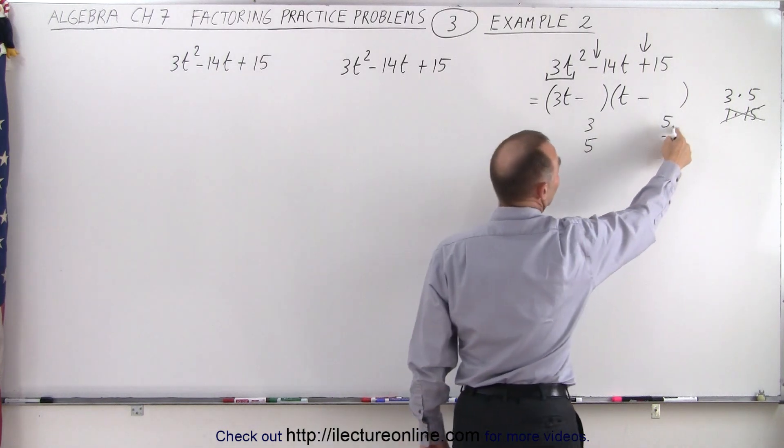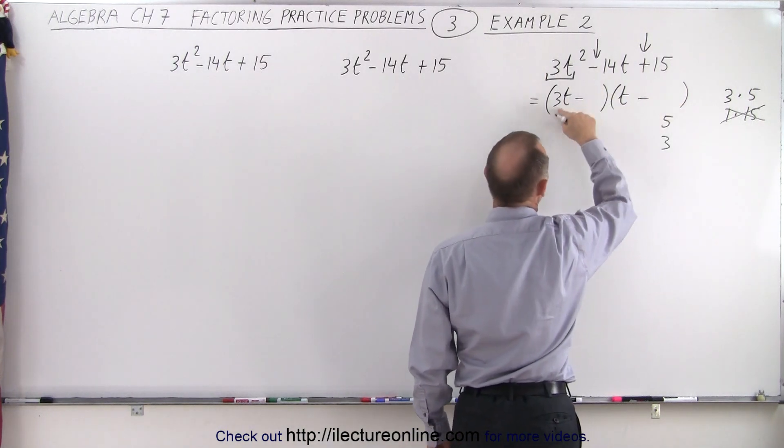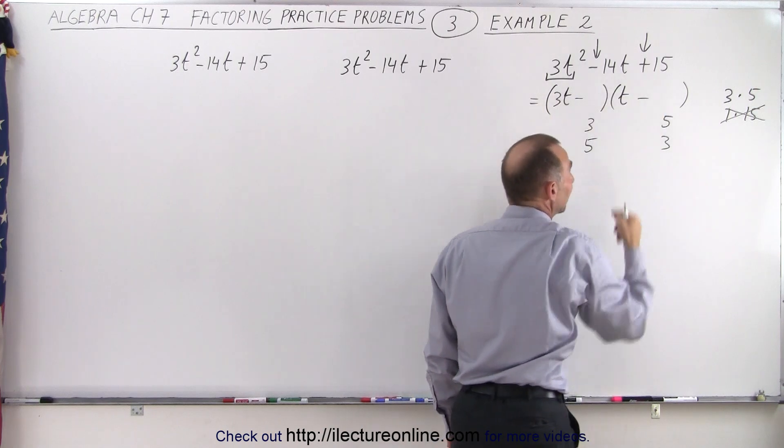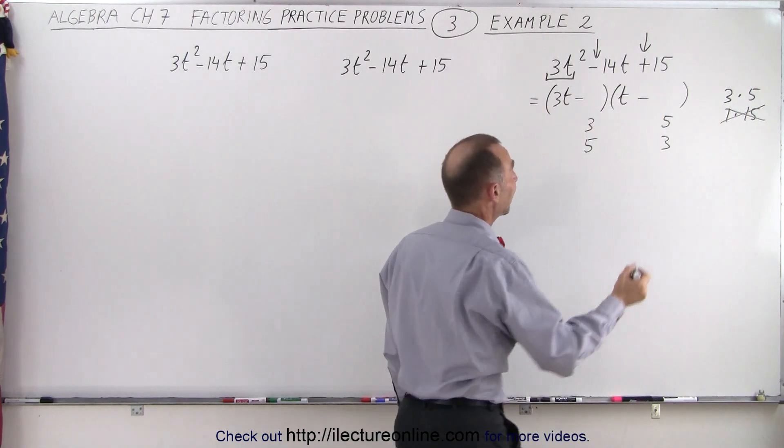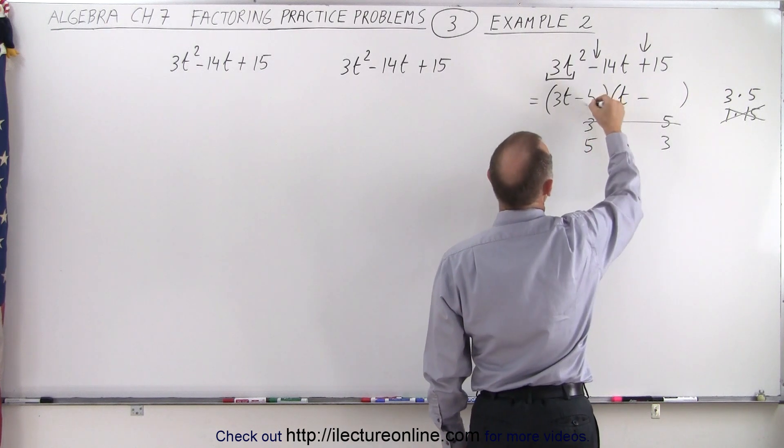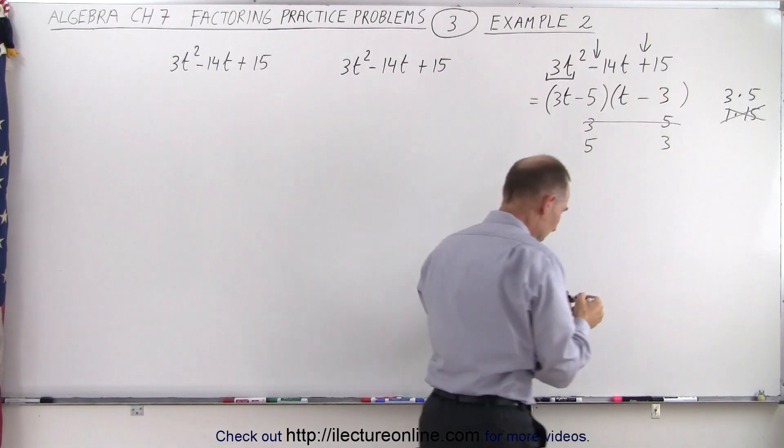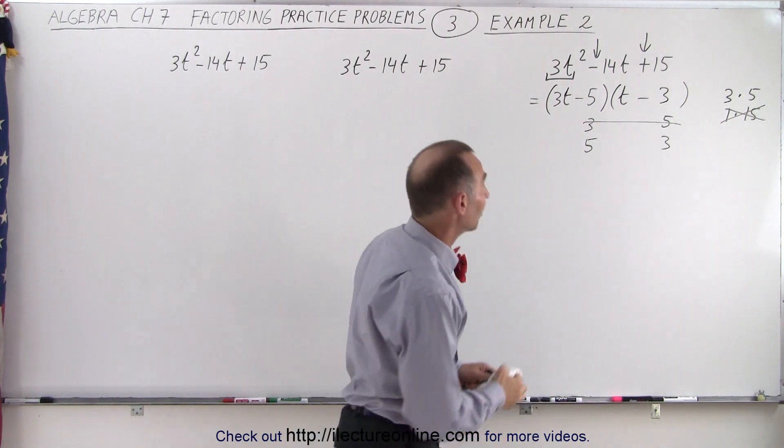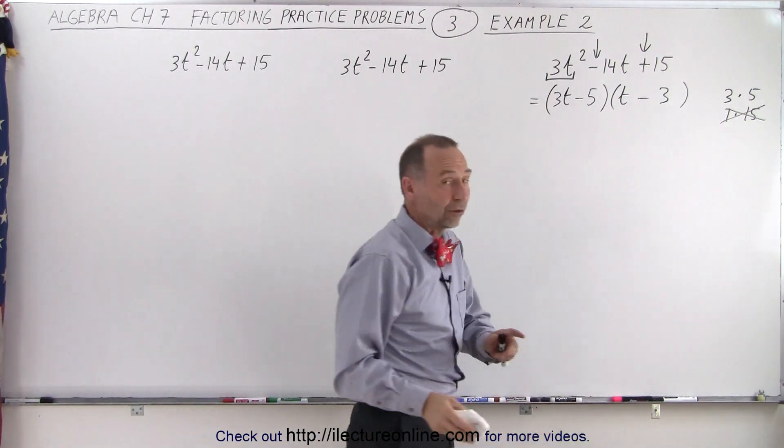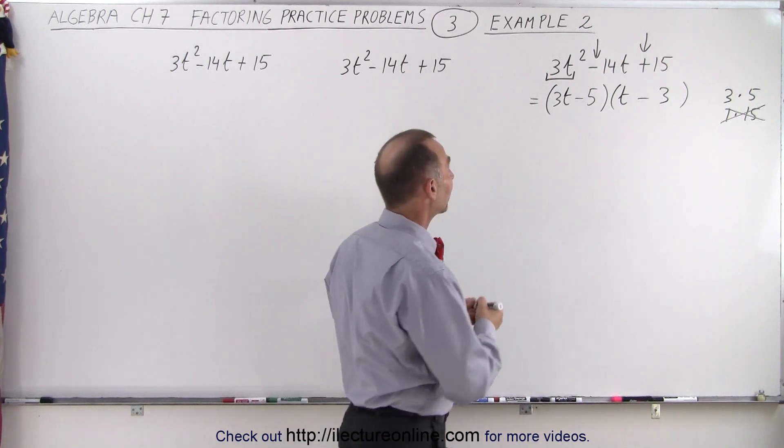Now notice if we put the 5 over here 5 times the 3 gives us a negative 15 or negative 5 times 3 gives a negative 15, that's already too big. So it cannot be this combination that leaves us only with this combination 5 and 3 and then let's go ahead and work it out to make sure we get the original polynomial back. So it's always a good check to see if you did it correctly.